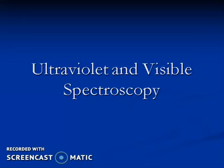Welcome to this new topic titled Ultraviolet and Visible Spectroscopy. In our syllabus we need to study electronic transitions, chromophores, auxochromes, spectral shifts, solvent effect on absorption spectra, Beer-Lambert's law with its derivation and deviations. We will also study the instrumentation part covering sources of radiation, wavelength selectors, sample cells, detectors, and the application of UV-visible spectroscopy.